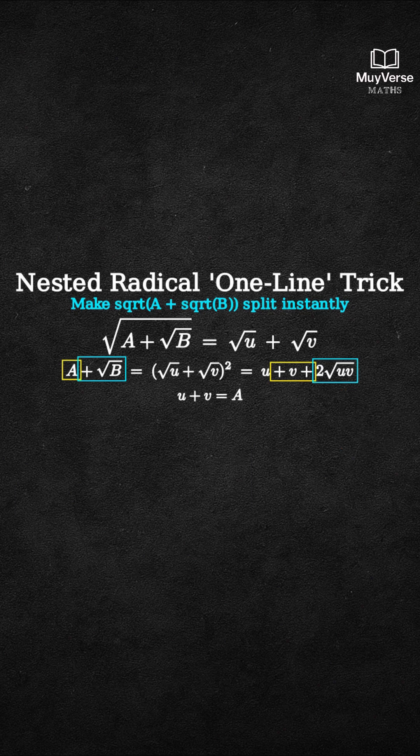u plus v equals a. And 2 times the square root of uv equals square root of b. Square the second relation. That gives uv equals b over 4.